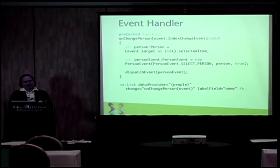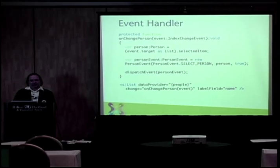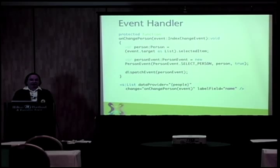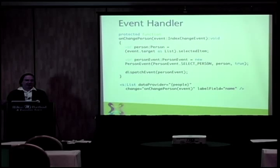Here's an example of some ActionScript code that is an event handler. We have an event handler called onChangePerson which takes an event of type IndexChangeEvent — in this case it's a list box, and that gives you the selected item. Inside the component, we're creating our own custom event called PersonEvent — a class we created ourselves that doesn't exist in the Flex framework. We create a new event and dispatch it to tell the outside world a new person has been selected. On the list itself, to set up the event handler, we just have change= and point it to our method — so whenever the list changes, call this method.